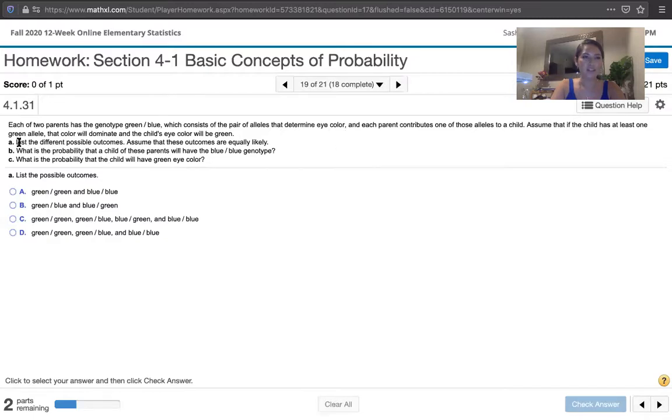First, we're asked to list the different possible outcomes and assume that those outcomes are all equally likely. Then we're asked for the probability that a child of these parents will have the blue-blue genotype, and then we're asked for the probability that the child will have green eye color.